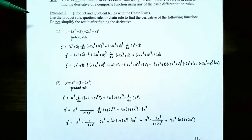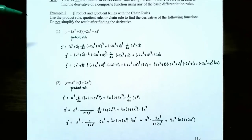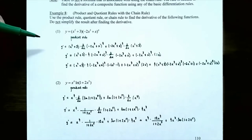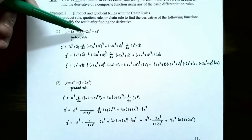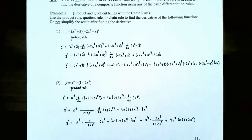Let's look at example eight: product and quotient rules with the chain rule. Use the product rule, quotient rule, or chain rule to find the derivative of the following functions. Do not simplify the result after finding the derivative. Number one: y equals the quantity x squared plus 3 times the quantity negative 2x cubed plus x, all to the fourth power. Notice that you have a product of one function and another function, so you have to use the product rule to find its derivative.